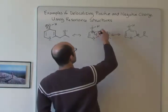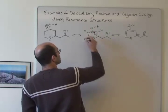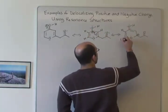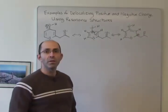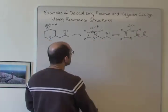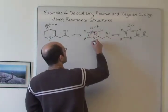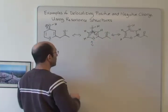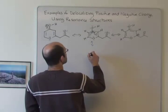Sometimes it's also helpful when you're doing this to draw in the H's instead of using complete organic shorthand. If you draw in the H's, you can verify that all the other carbons in this molecule have four bonds, so they have no formal charge. And as we said, there's another way to delocalize — on the other side with the pi bond that's in that position.